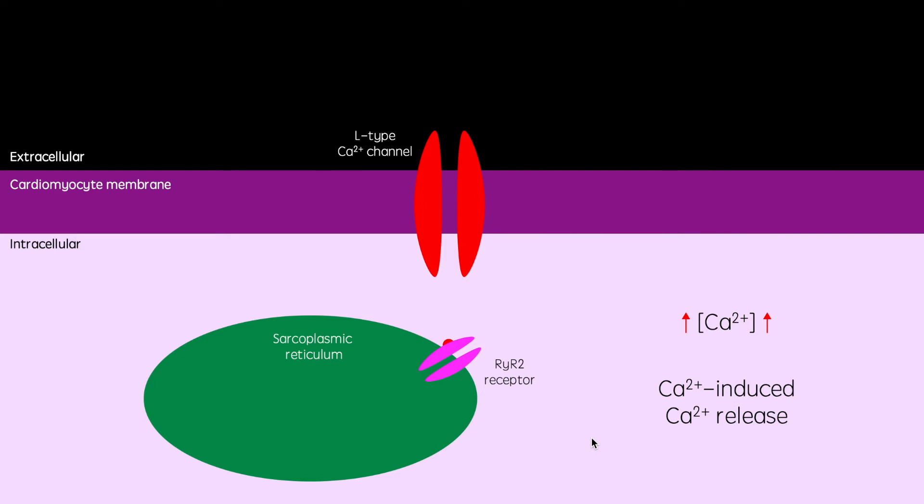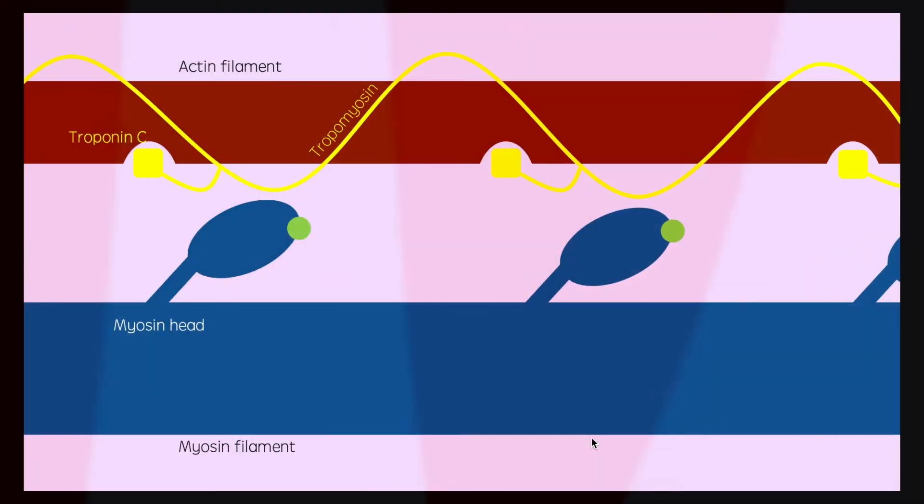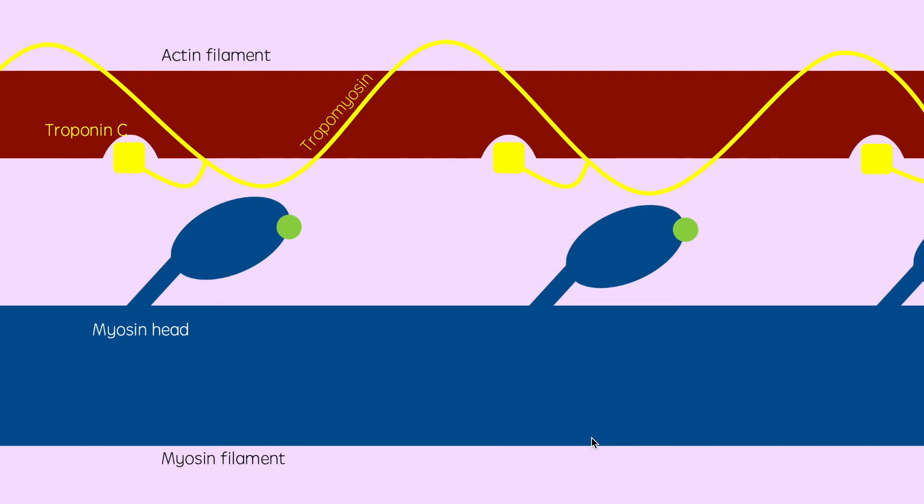So, onto the contractile machinery. When cardiomyocytes are relaxed, tropomyosin strands, the yellow strand here, wind around actin strands, blocking their myosin binding sites. However, upon calcium entry, calcium binds to troponin C molecules, which induces conformational changes in the tropomyosin strands to which they are attached. This pulls the tropomyosin away, thus exposing the myosin binding sites on actin strands.